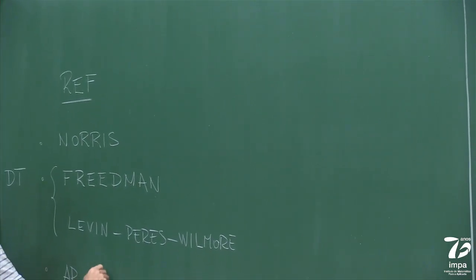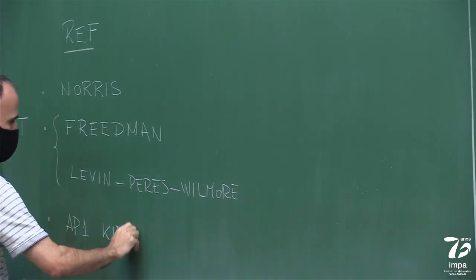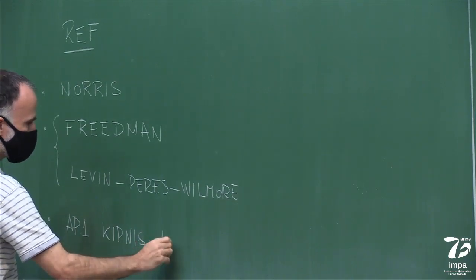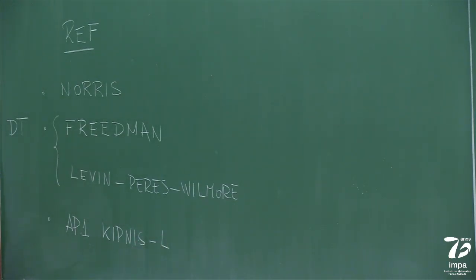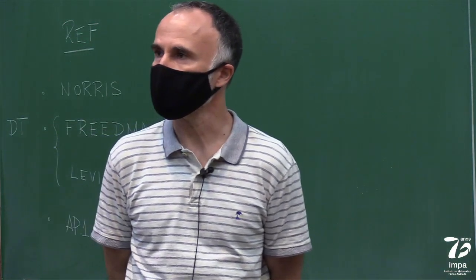This is Kipnis, Appendix 1 of Kipnis. And there are many more that you can look at on the internet. There are many books on continuous time Markov chains.